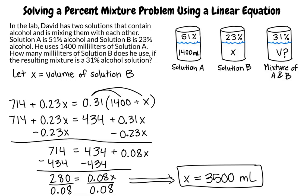This means that to make the mixture, we must add 3500 milliliters of solution B. Now let's do one more example. This time we will use a method that does not require a table to organize the information.